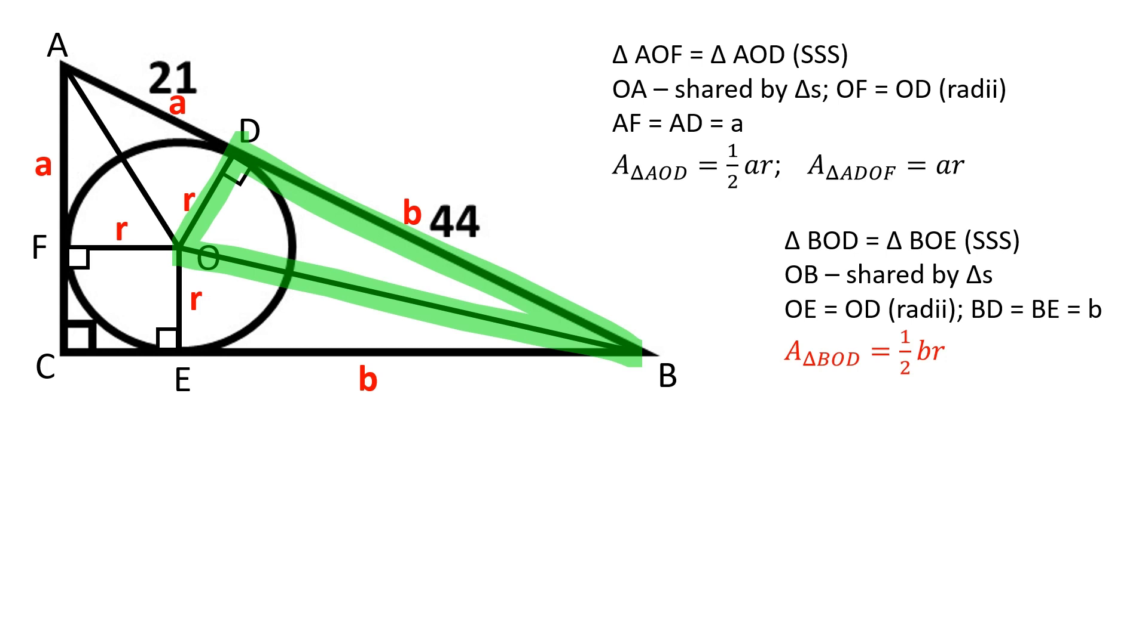BOD is a right triangle. The area of the triangle BOD is equal to half the product of B and R.